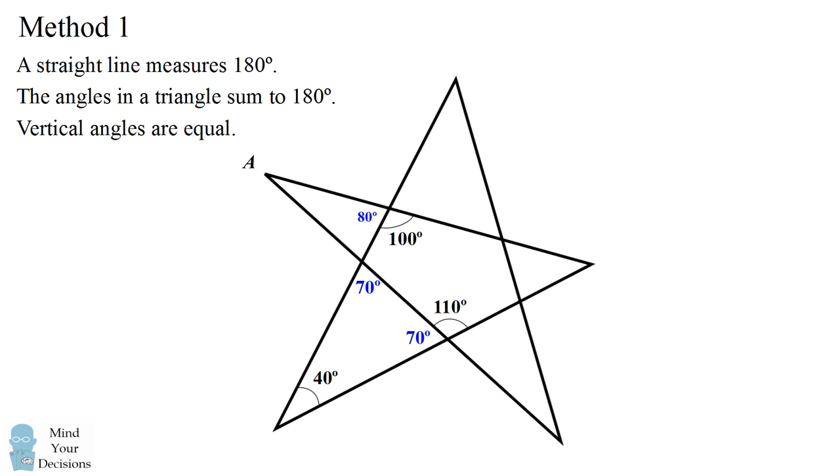We then use the principle that vertical angles have equal measure. So the angle above 70 degrees is equal to 70 degrees.